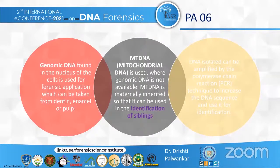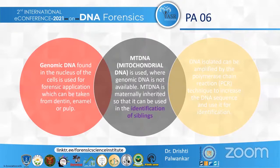Genomic DNA is found in the nucleus of cells and is used for forensic applications. It can be taken from the dentine, enamel, or pulp. Where genomic DNA cannot be used, mitochondrial DNA is used instead — it can be inherited maternally and used for identification of siblings. DNA isolation can be amplified by PCR reaction to increase the DNA sequence and then used for further identification.